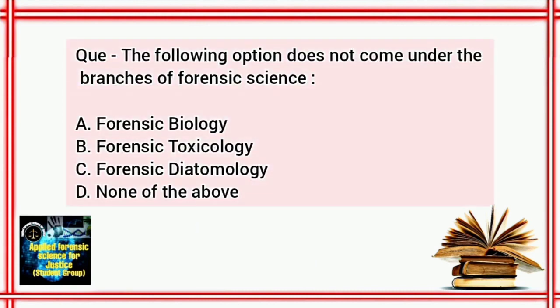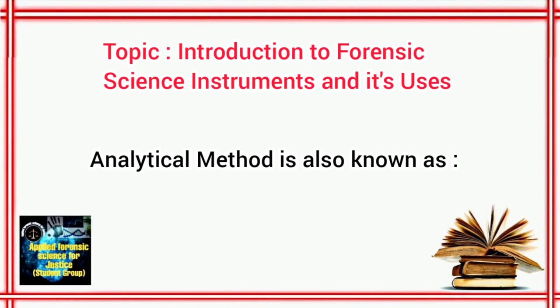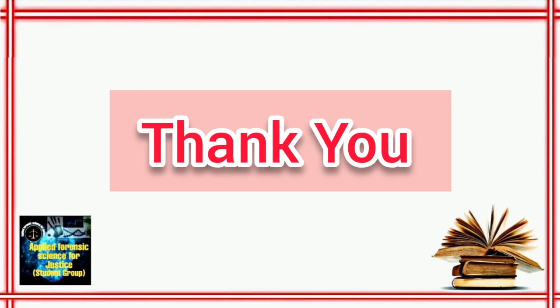We have come to the end of the video. The question is: which of the following does not come under the branches of forensic science? Option A: Forensic Biology, Option B: Forensic Toxicology, Option C: Forensic Diatomology, Option D: None of the above. Post your correct answers in the comment section below. In the previous video on introduction to forensic science instruments, the correct answer was C: Instrumental Method. Thank you for watching. If you have any doubts regarding branches of forensic science, please comment below and do like and subscribe our channel.